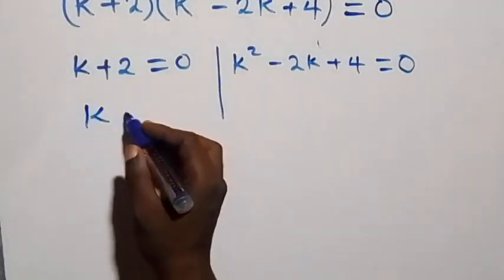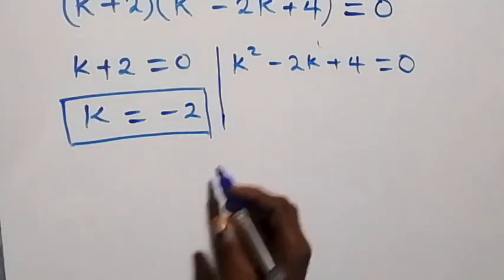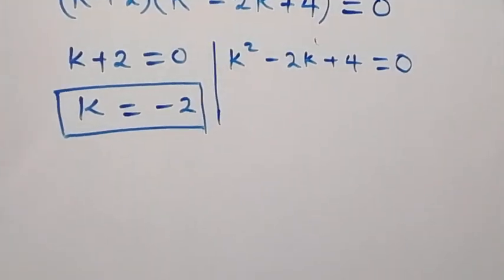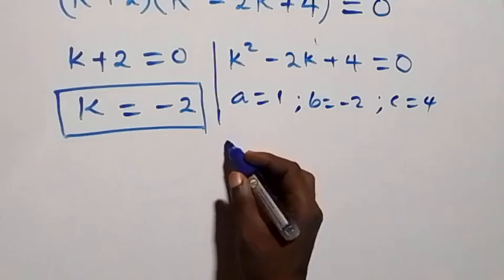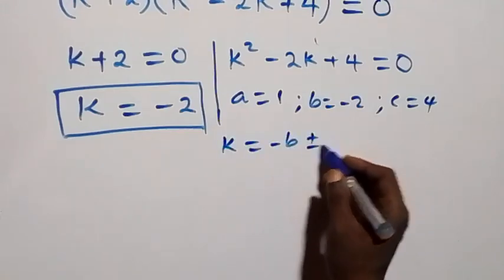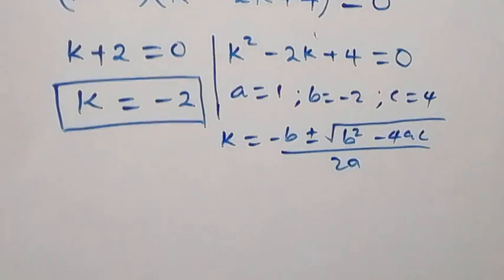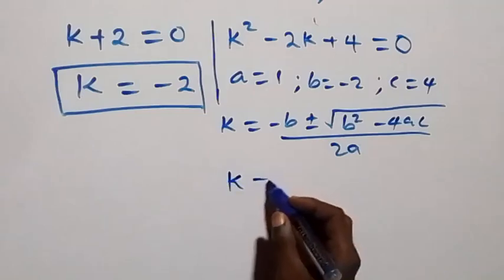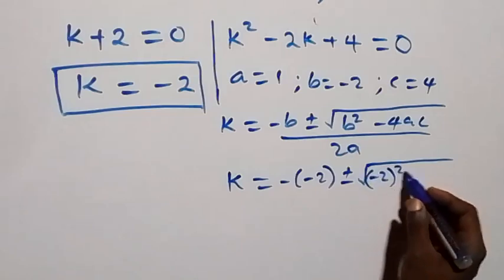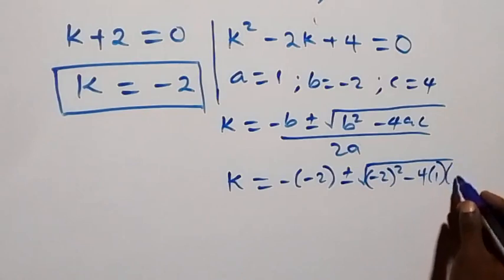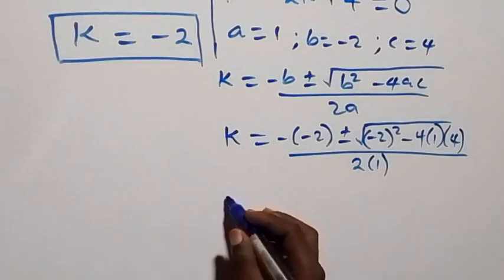From here we have two cases: k plus 2 equals 0, giving k equals minus 2, so we have one real solution there. On the other side we have a quadratic equation where a equals 1, b equals minus 2, and c equals 4. From the quadratic formula, k equals minus b plus or minus square root of b² minus 4ac over 2a, this becomes k equals 2 plus or minus square root of (minus 2)² minus 4 times 1 times 4, divided by 2 times 1.